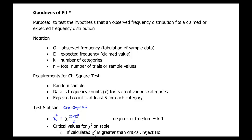We're going to learn some new notation. We have O for observed frequencies. We have E for expected frequencies, and these are the ones that you're going to get from some null hypothesis that you write. K is going to be the number of categories. N is the total number of trials — all the sample individuals added together.